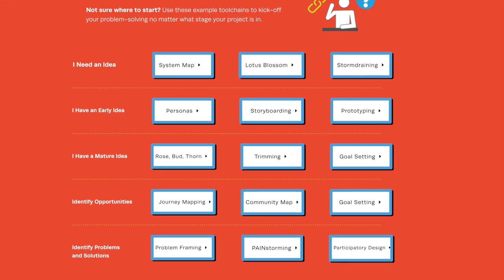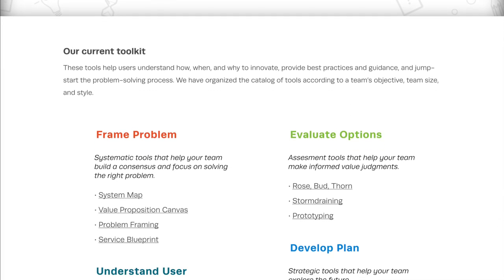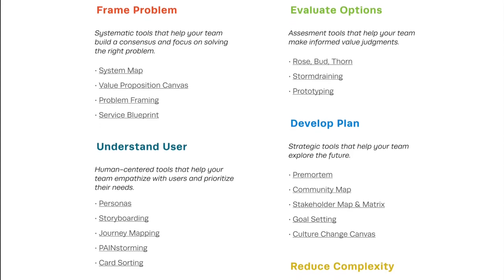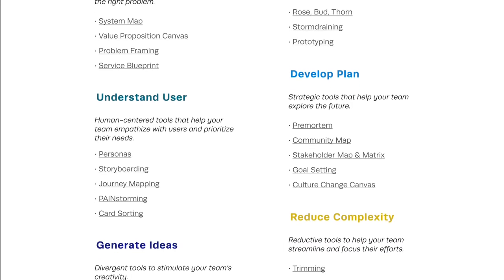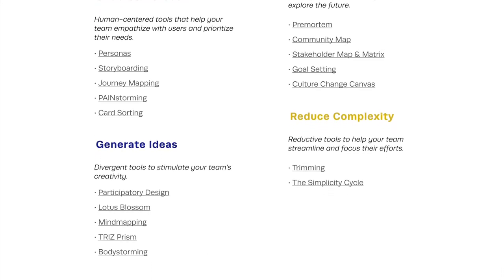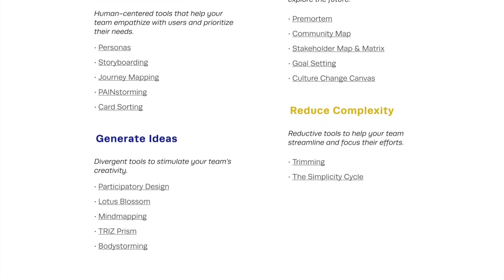Another way to get started is to go to the Categories page. There you will find six key innovation objectives: frame the problem, evaluate options, understand the user, develop a plan, generate ideas, and reduce complexity. These categories highlight tools that help you tackle each challenge.